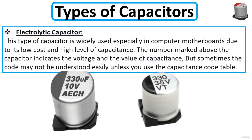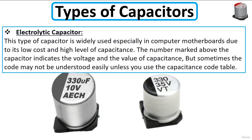Let's begin with the electrolytic capacitor. This type of capacitor is widely used, especially in computer motherboards, due to its low cost and high level of capacitance. The number marked above the capacitor indicates the voltage and the value of capacitance.